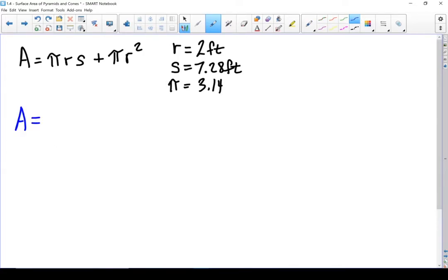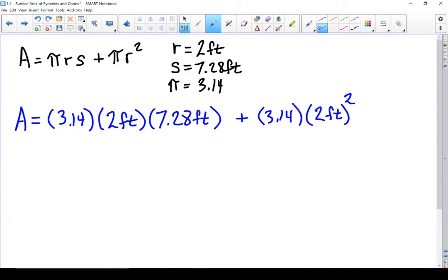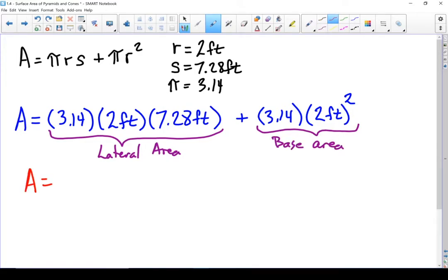My area equals... There's my equation set out. Remember this first part is the lateral area and the second part is my base area. Going through the calculations, my lateral area, multiply those three numbers together. 3.14 times 2 feet times 7.28 gives me 45.72. Looking at my base area, remember your order of operations. So we do the exponent first. 2 squared equals 4 and 4 times 3.14 gives me 12.56.